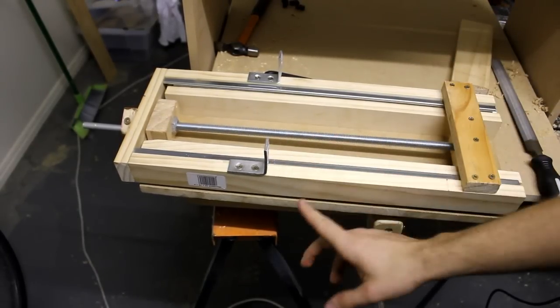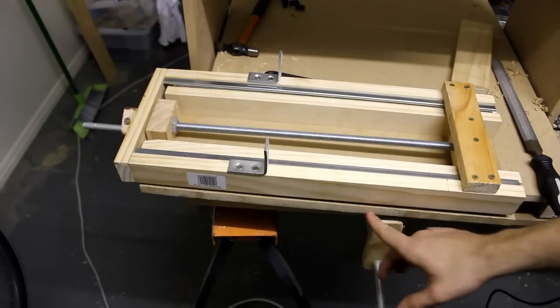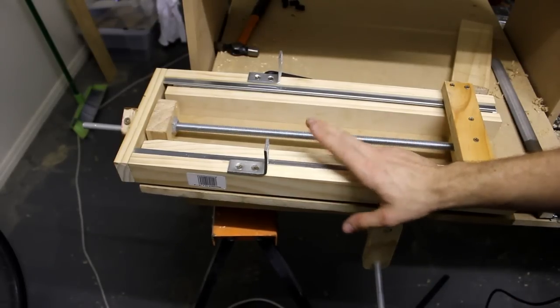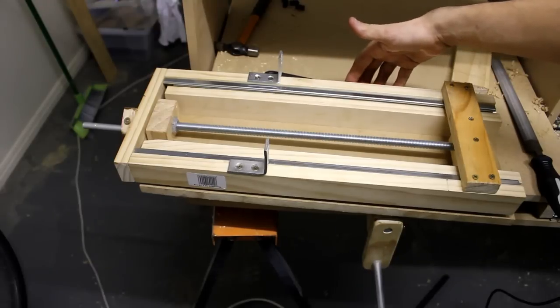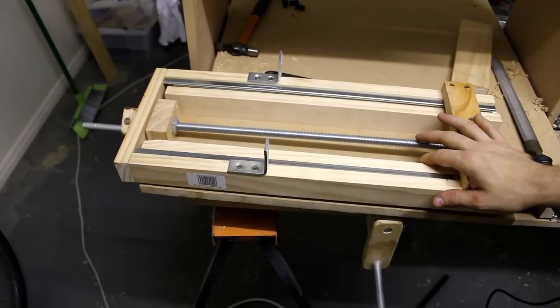I'm going to be using these L brackets as well as putting some screws through these bits of 42 by 19. I'm going to have to remove the face plate from it to get to it. I'm also going to be adding some brackets on the side which will give it a bit of extra strength as well.